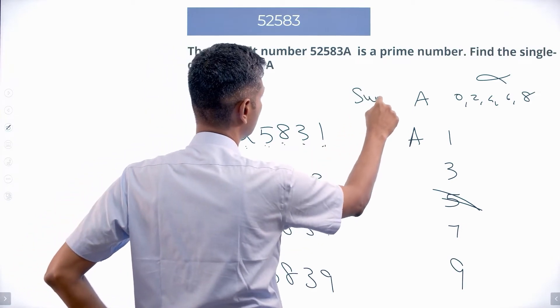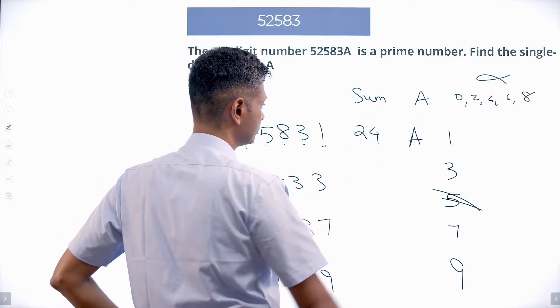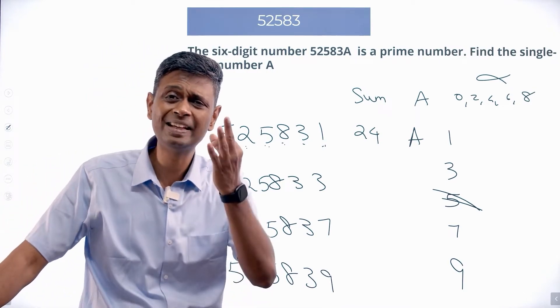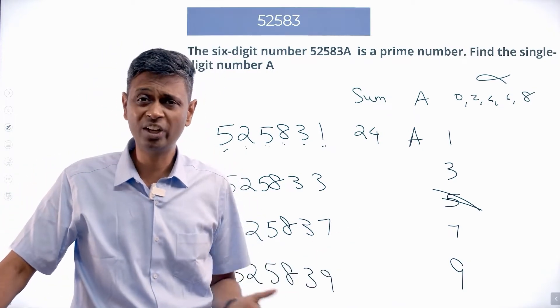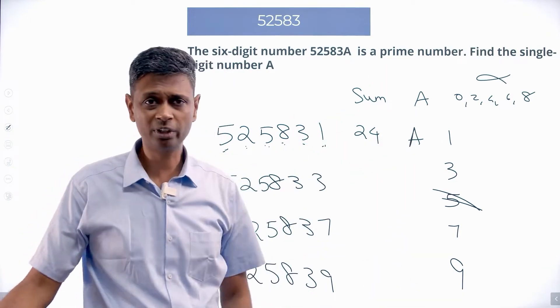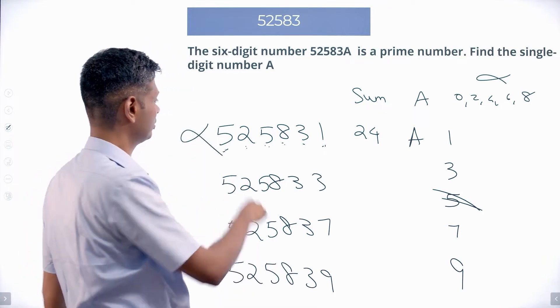Why am I doing sum of the digits? Because I want to verify if it's divisible by 3. Checking for 2 and 5 is very easy, I've already done that. Next I'll check for 3. Sum of the digits is 24. Here the number is not prime, it's a multiple of 3.